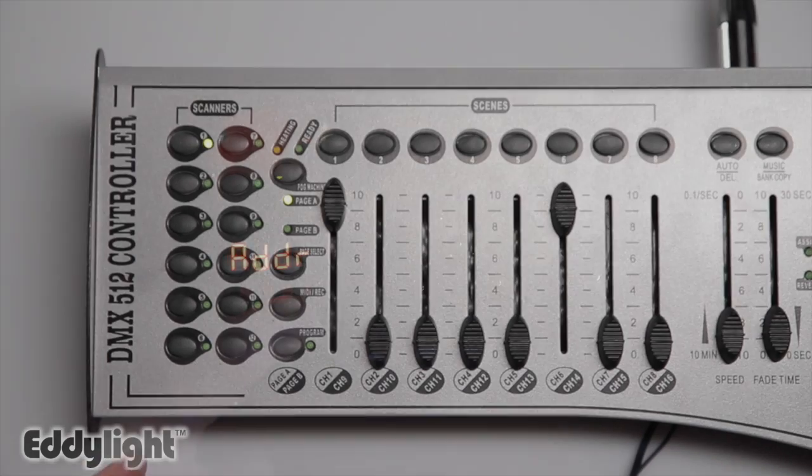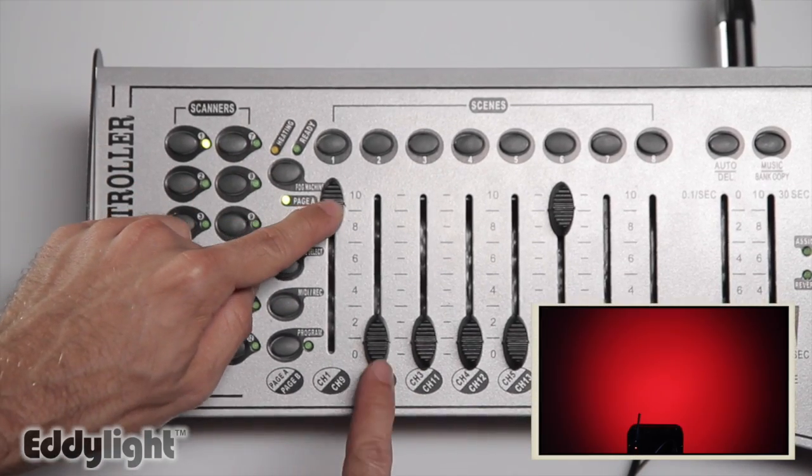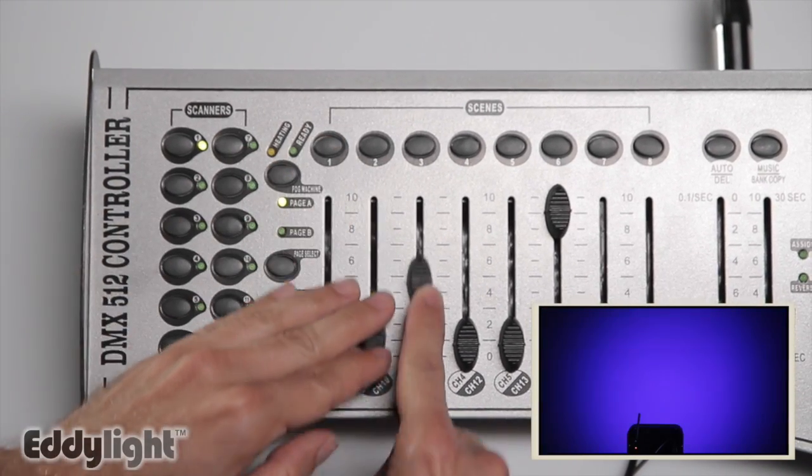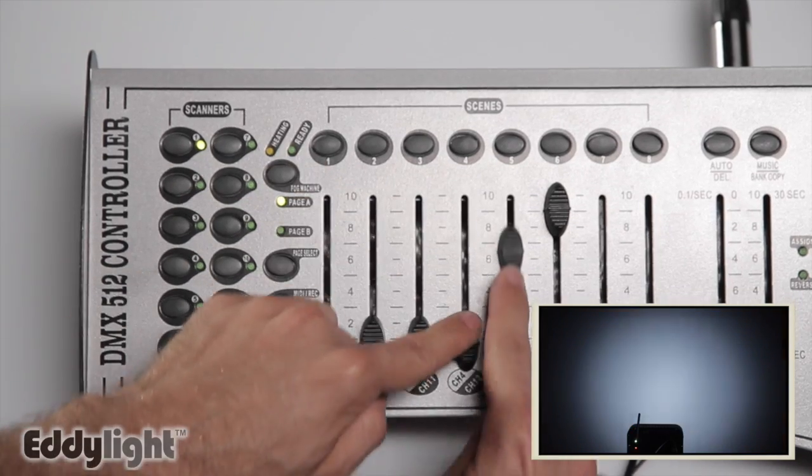And now your lights, similar to 5-channel, are red, green, blue, amber, and white.